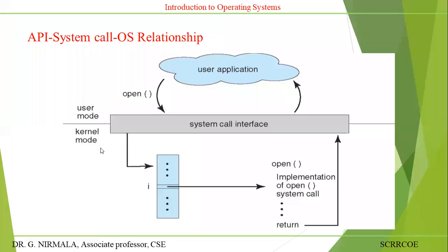This switching is called context switching. Context switching means the OS will move from one mode to another mode — user mode to kernel mode and vice versa, kernel mode to user mode. The open system call returns whether the file may be opened or not to the end user. This is the relationship between OS and the system call.